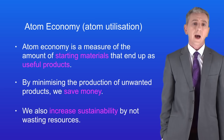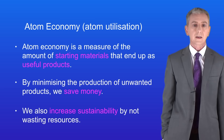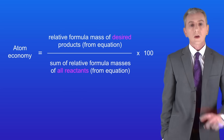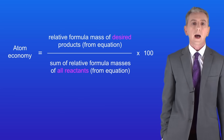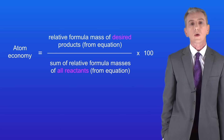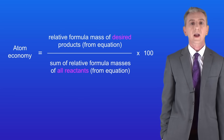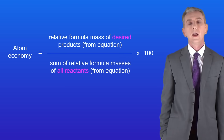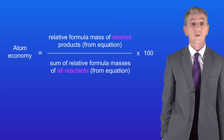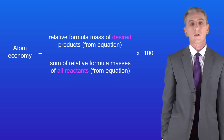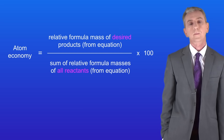So how do we calculate atom economy? We use this equation: atom economy equals the relative formula mass of desired products from the equation, divided by the sum of relative formula masses of all reactants from the equation, multiplied by 100.